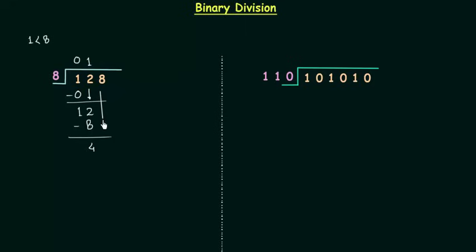Now this 8 will come down. So we have 48 and 8 times 6 will give us 48 exact division and remainder is 0. So this is our answer. The quotient of this division and we have to find quotient in every division.